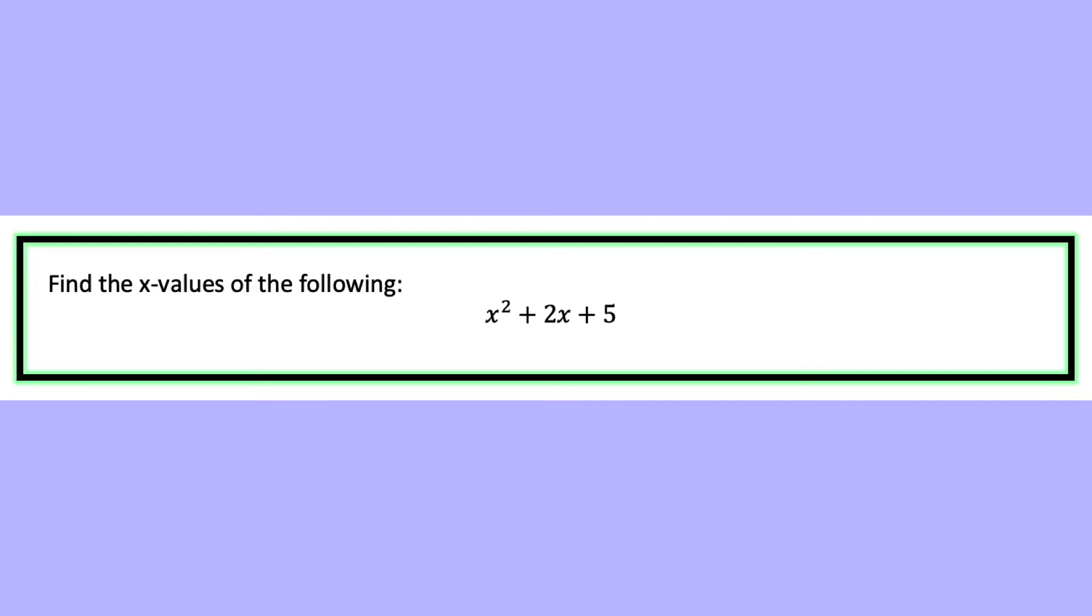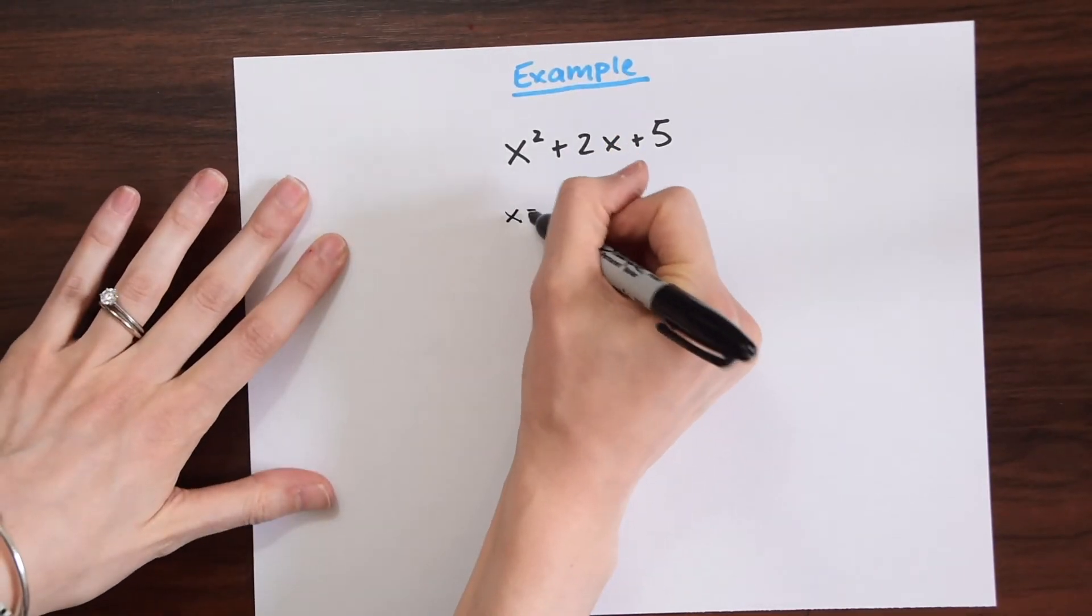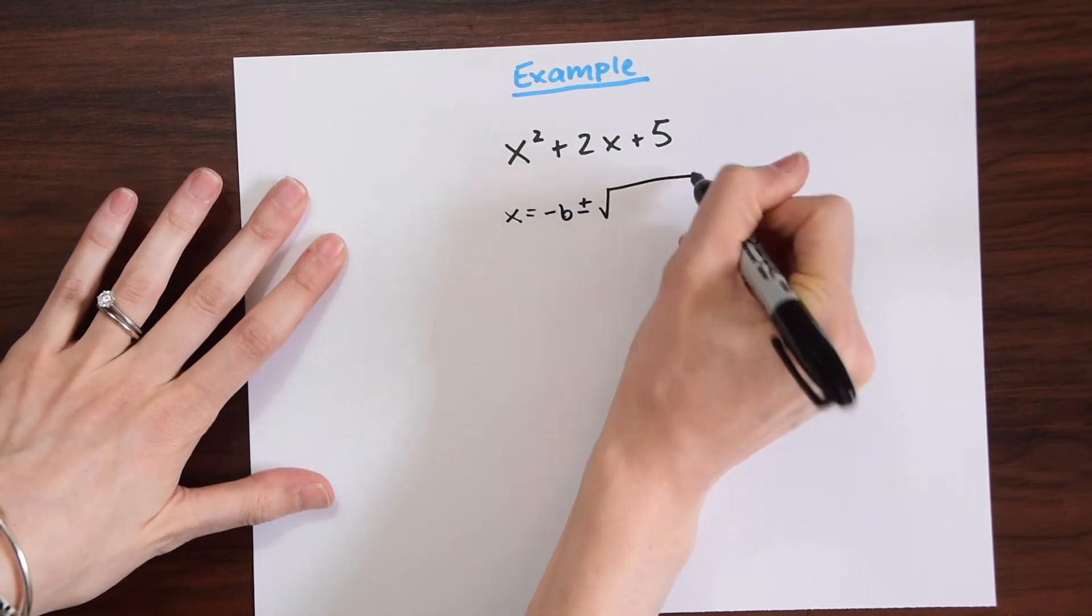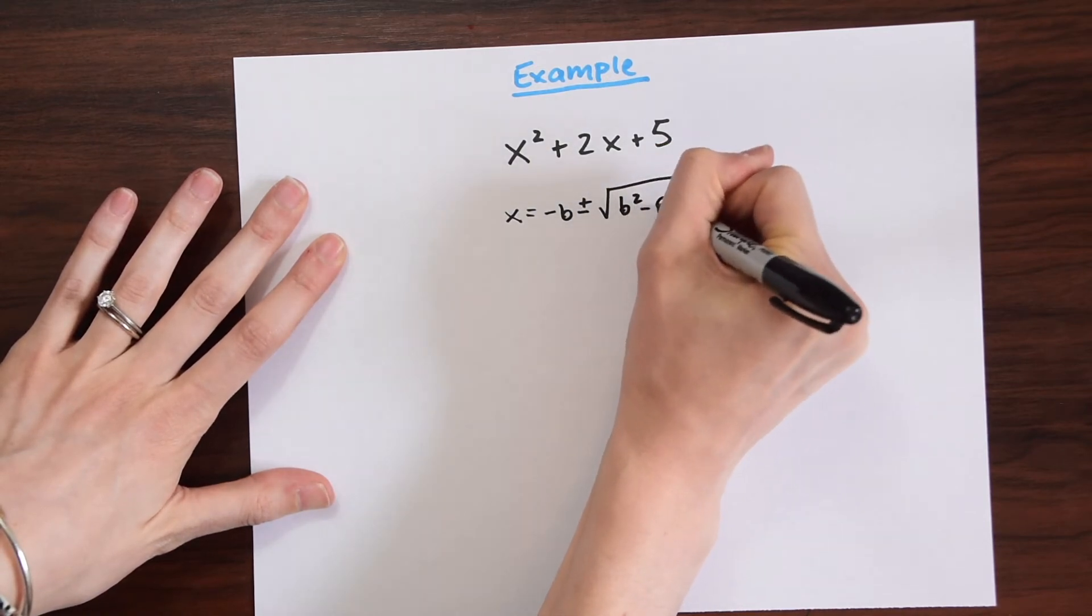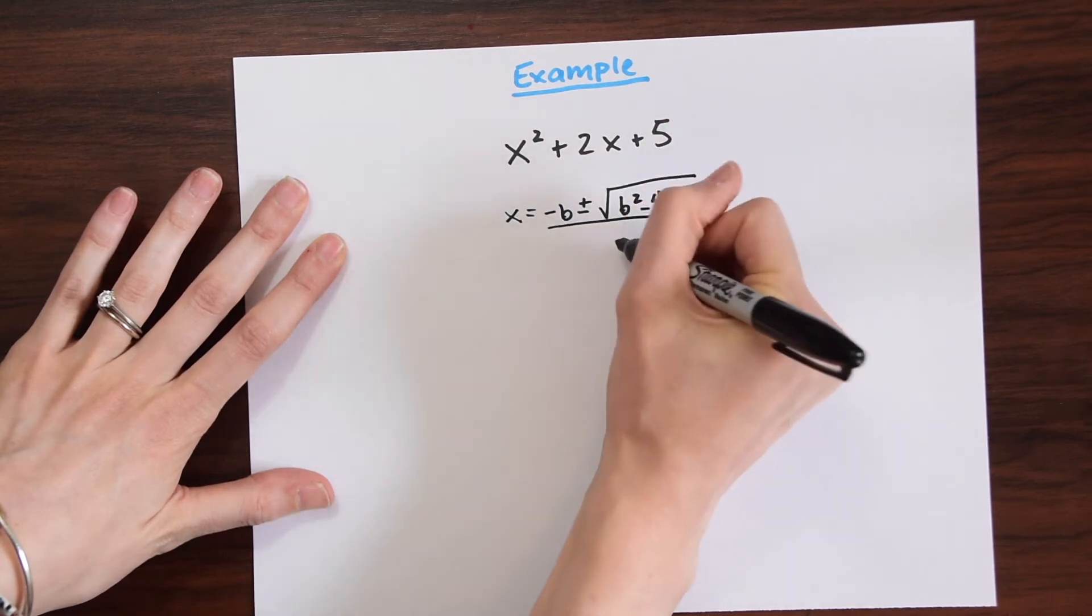So let's look at our example here. We are asked to find the x values of the following: x squared plus 2x plus 5. We're going to use that quadratic formula. So let's write that out.